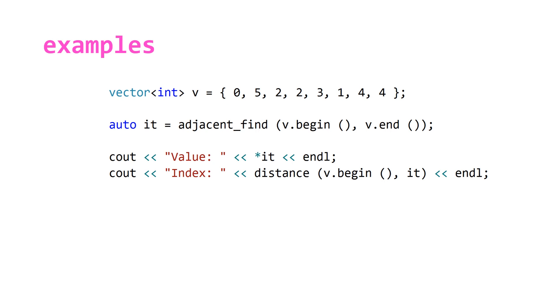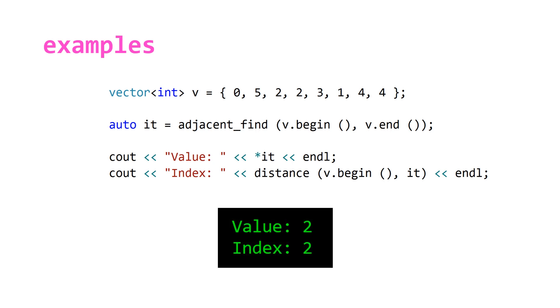So if we run this piece of code here, we're going to end up with the value 2 and index 2, which means we are going to return an iterator pointing to this value, which makes sense because it's the first value that matches the value after it.